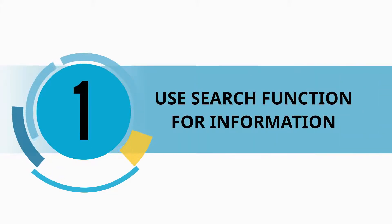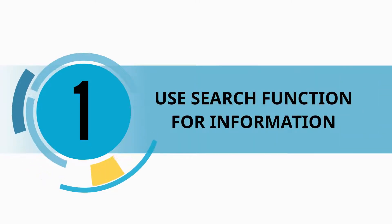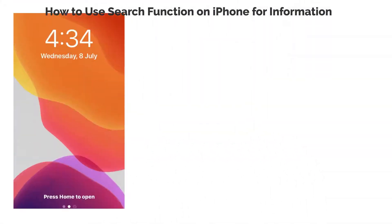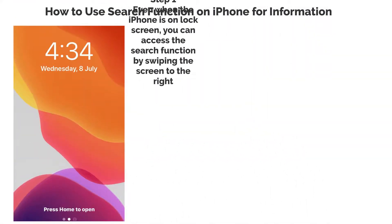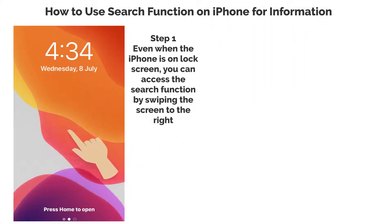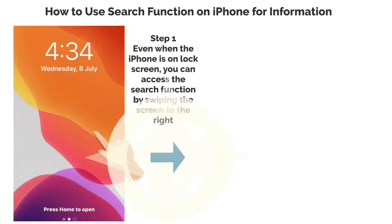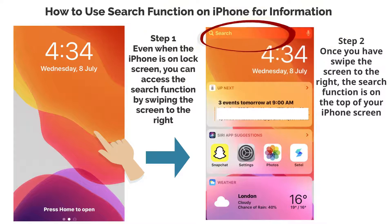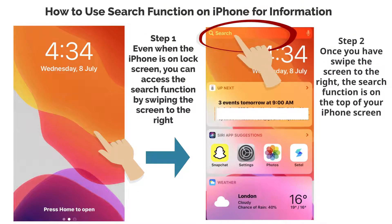Use search function for information. Step 1: even when the iPhone is on lock screen, you can access the search function by swiping the screen to the right. Step 2: once you have swiped the screen to the right, the search function is on the top of your iPhone screen.